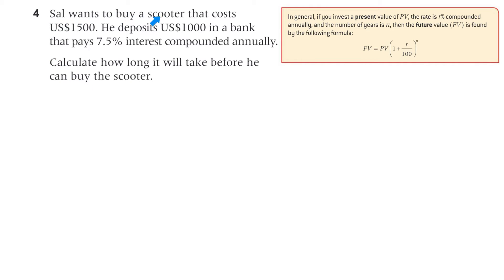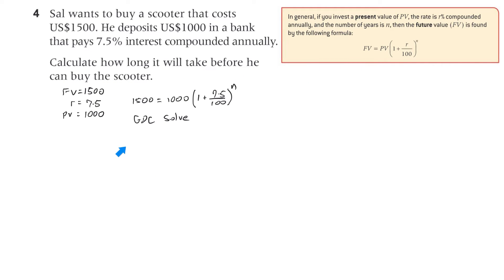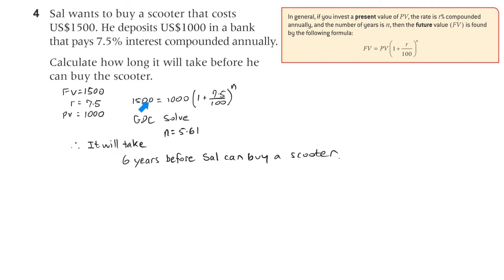Question four. Sal wants to buy a scooter that costs $1,500 US dollars. He deposits $1,000 in a bank that pays 7.5% interest compounded annually. Calculate how long it will take before he can buy the scooter. The future value is 1,500, R is 7.5%, and the present value is 1,000. Put it in the formula and use the solve function — we get 5.61, so it will take six years before Sal can buy the scooter.